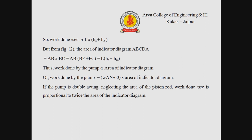Work done by the pump is proportional to L × (HS + HD). From figure 2, the area of indicator diagram ABCDA = AB × BC = AB × (BF + FC) = L × (HS + HD), where BF = HS and FC = HD. Thus, work done by the pump equals weight density × area × N/60 × area of the indicator diagram. For a double-acting pump, neglecting the piston rod area, work done per second is proportional to twice the area of the indicator diagram.